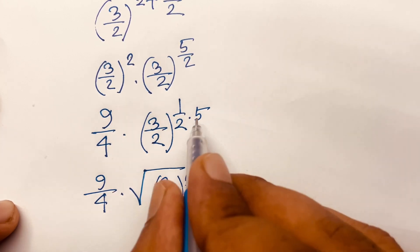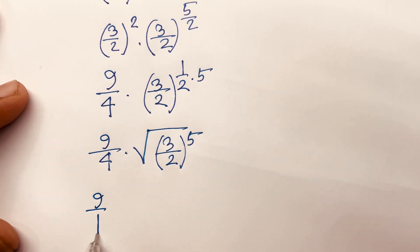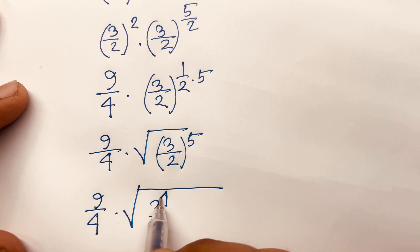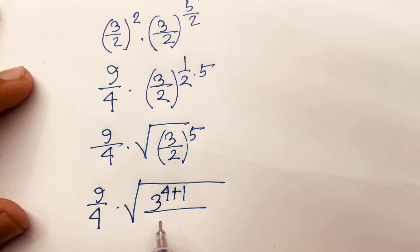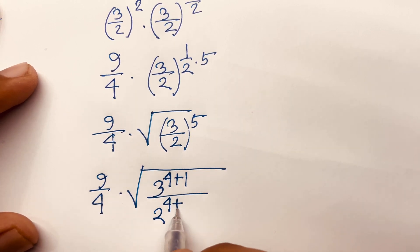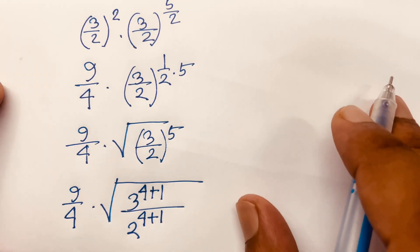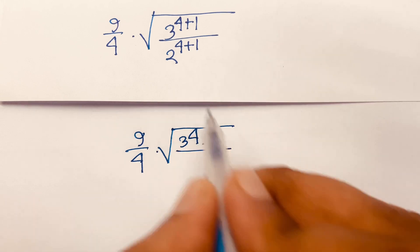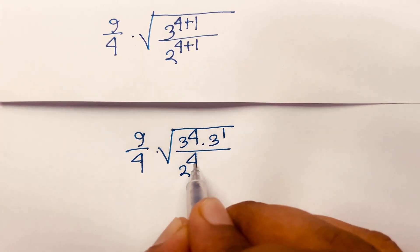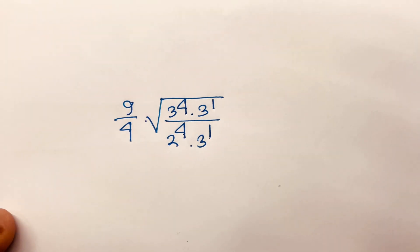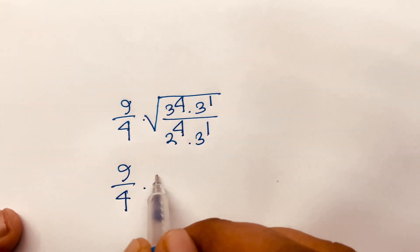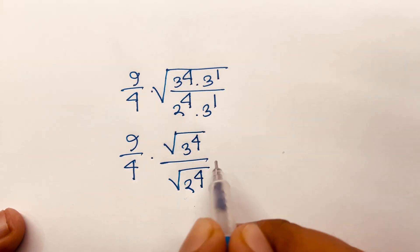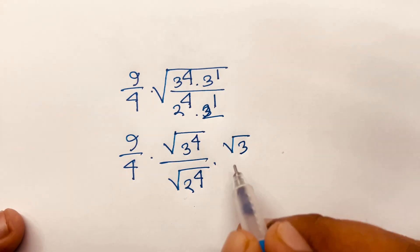So the expression is 9/4 times √((3/2)⁵). We can write (3/2)⁵ as 3⁵/2⁵, and then split the exponents: 3⁴⁺¹ over 2⁴⁺¹. This gives us 9/4 times √(3⁴ · 3 / (2⁴ · 2)), and further expanding: 9/4 times √(3⁴/2⁴) times √(3/2).